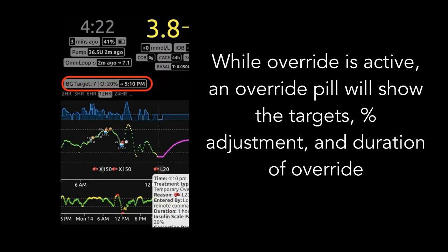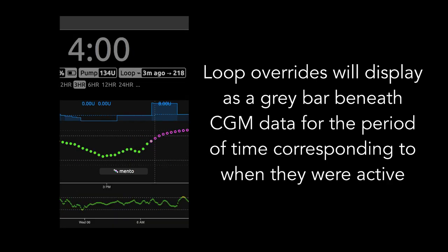Loop will also upload information to Nightscout about currently running overrides. While an override is active, you'll see an override pill indicating the targets of the override, the percentage insulin adjustment, as well as the ending time of the override. When the override is active, you'll see a gray bar beneath the CGM data, and when the override is turned off, that gray bar will end — so the gray bar corresponds to the time period that the override was active.